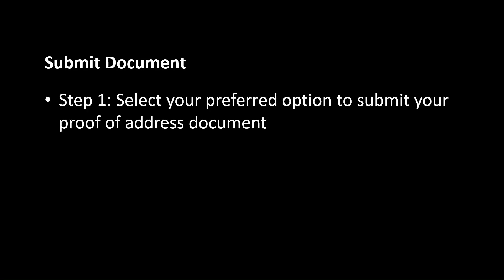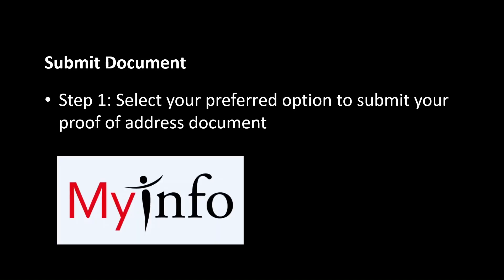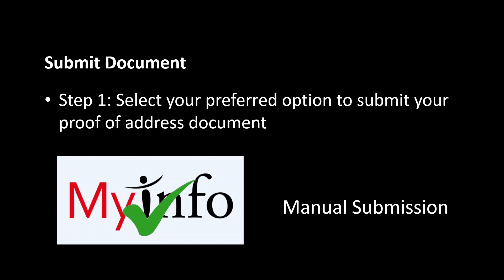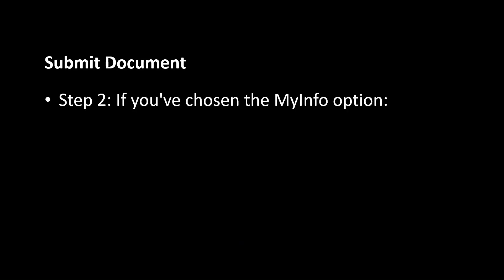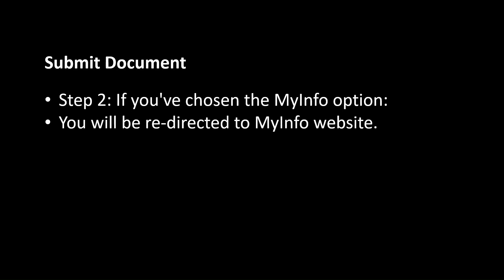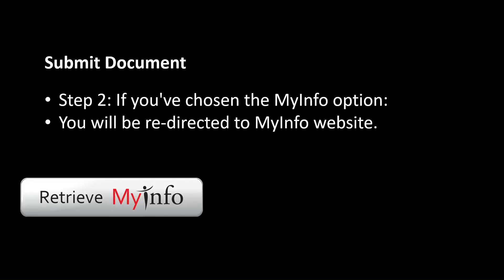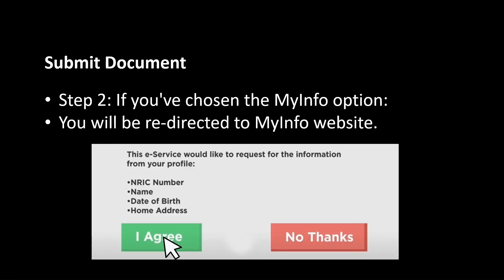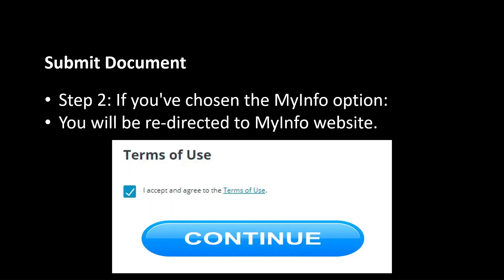Submit Document. Step 1: Select your preferred option to submit your proof-of-address document. MyInfo is recommended for quicker verification time — this was how I signed up. But if you choose to perform manual submission, you will have to allow 1-2 business days to process. Step 2: If you've chosen the MyInfo option, you will be redirected to the MyInfo website. Log in with your ID number or QR code and click Retrieve MyInfo. Select the I Agree button. You will be redirected to CoinHako's website. Select the Accept and Continue button. Wait for the verification process to complete.